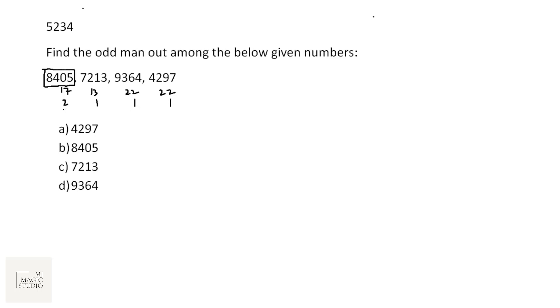One more digit sum classification: 1 plus 7 is 8, 1 plus 3 is 4, 2 plus 2 is 4 and this is 4. Digit sum of these 3 are 4 and digit sum of the first one is 8 which is different. So we have got two different classifications on which 8405 would be the odd one out.